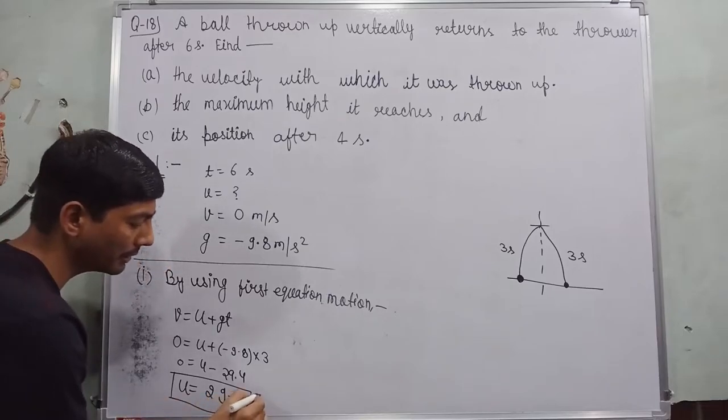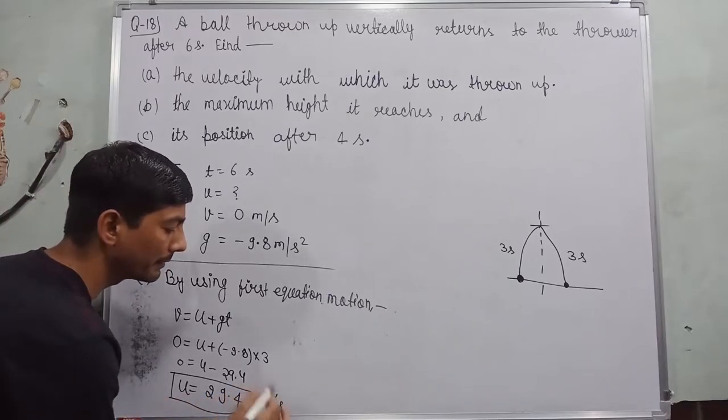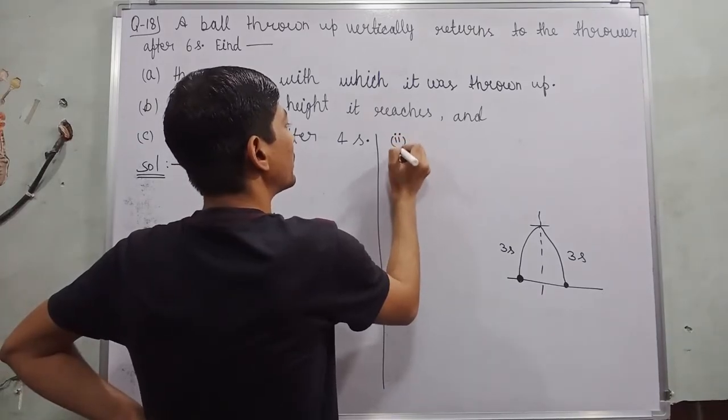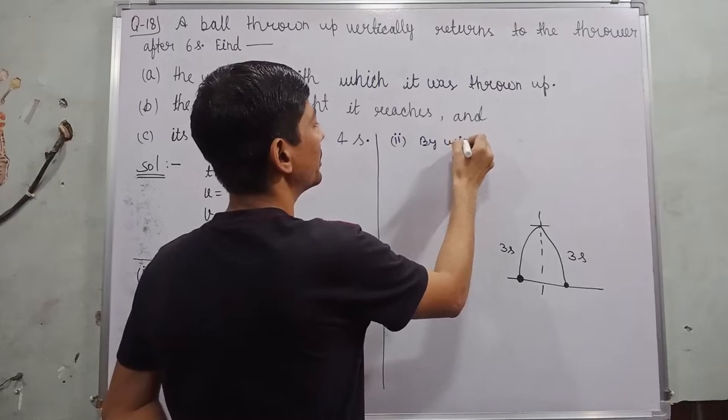there will be minus 24.9, go toward another side becomes u is equal to 29.4 meter per second. Now for second, by using third equation of motion